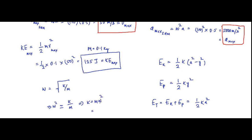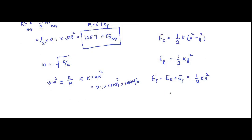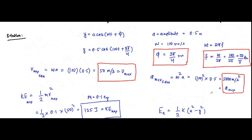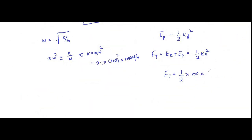To find k, we use ω = √(k/m), so ω² = k/m, giving k = mω² = 0.1 × 100² = 0.1 × 10000 = 1000 N/m. Therefore, total energy = ½ × 1000 × (0.5)² = ½ × 1000 × 0.25 = 125 joules. That is the total energy.